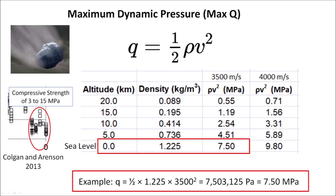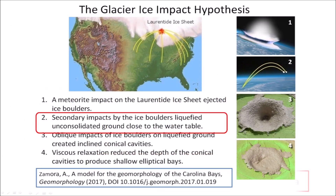This slide shows an example of the calculation of Max Q for a projectile traveling at sea level with a speed of 3,500 meters per second. The result is given in pascals and can be expressed as megapascals by dividing by one million.